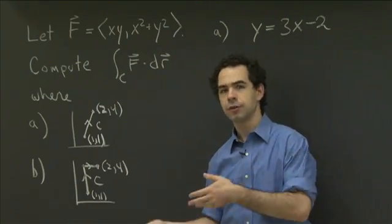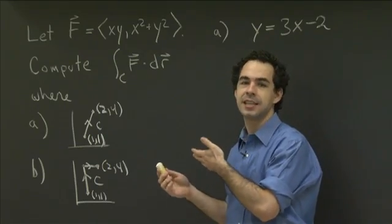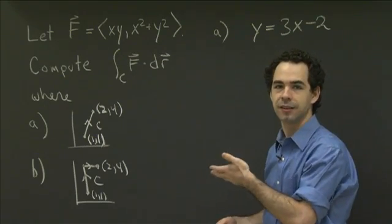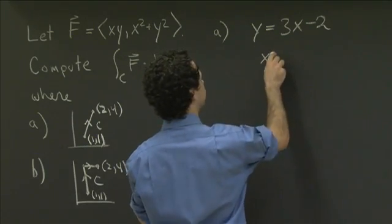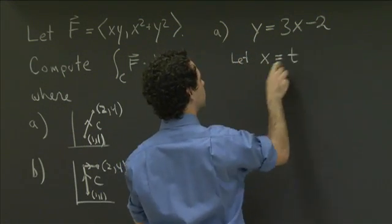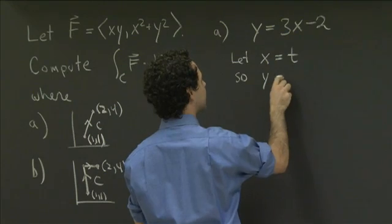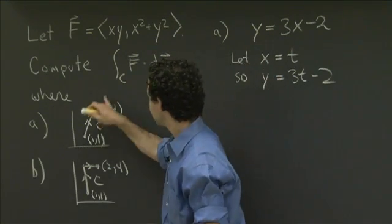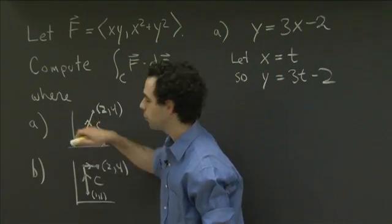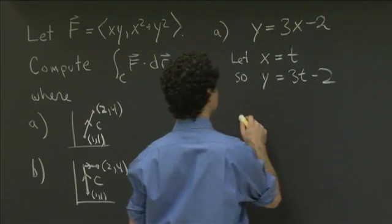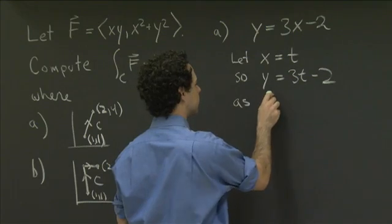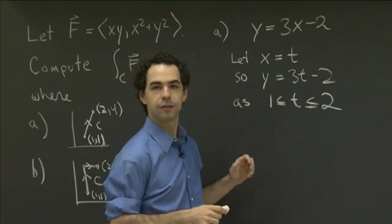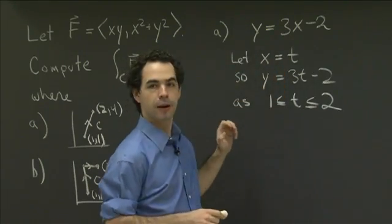I'm going to use the letter t here in part A, though you could do this problem the same way just using x. I'll let x equal t, so that y equals 3t minus 2. That gives parametric equations for the entire line, but we only want the part between (1,1) and (2,4), which is the part where t is between 1 and 2.